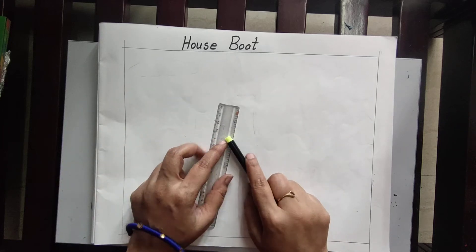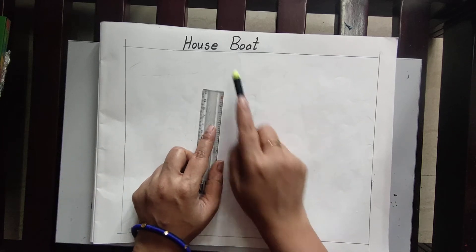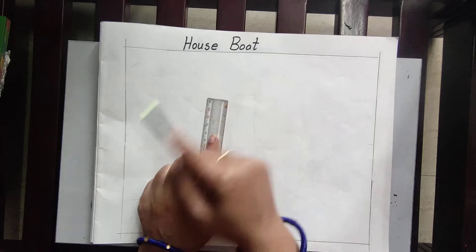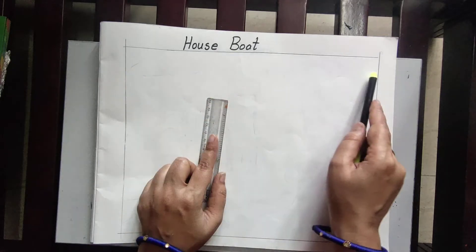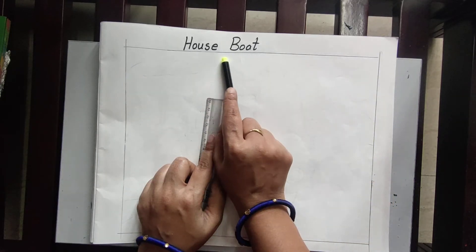Good morning children. Welcome to the art class. Today our topic is houseboat. First you draw the margin and write topic name houseboat.